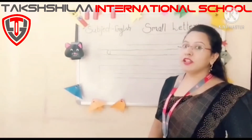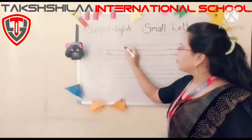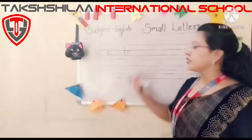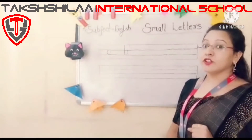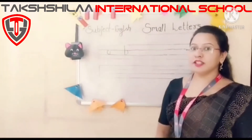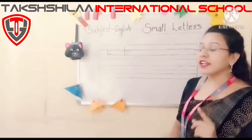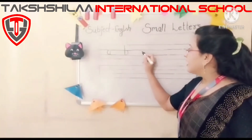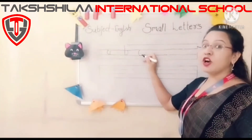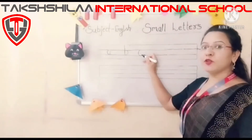Then B for ball — standing line, then curve. Standing line, then curve. You have to use three lines to write B for ball. Next letter is C for cat — curve in the middle of two lines.